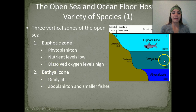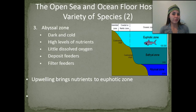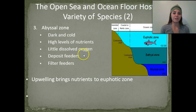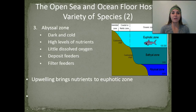In the bathal zone it's very dimly lit, and zooplankton and smaller fishes can be found here. The abyssal zone is very dark and cold — the pressure is also extremely high there because it's found very deep within the ocean. It has high levels of nutrients but very little dissolved oxygen content, and you're going to find a lot of deposit feeders and filter feeders that live here. We also have upwellings that bring nutrients from the abyssal zone up to the euphotic zone.